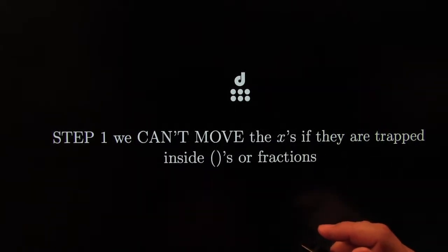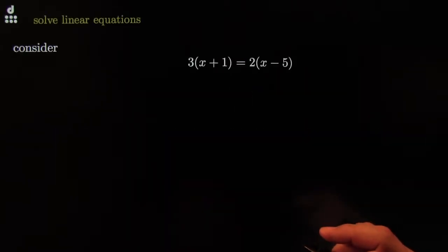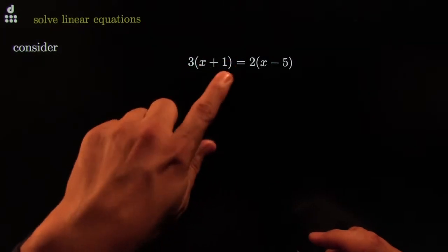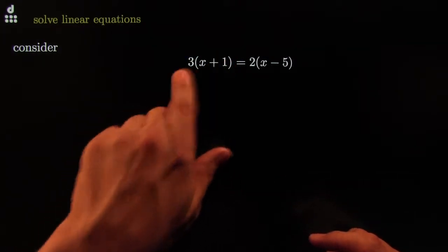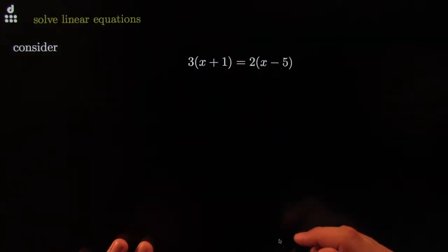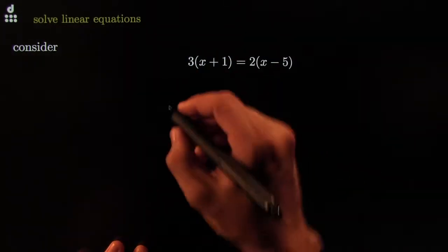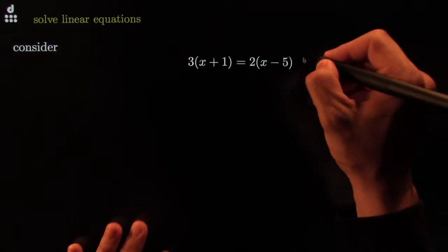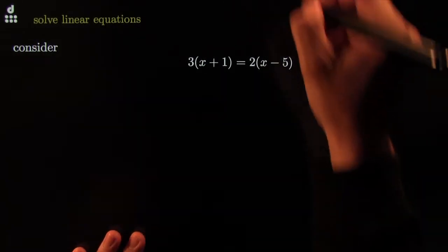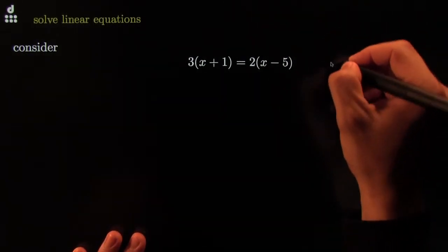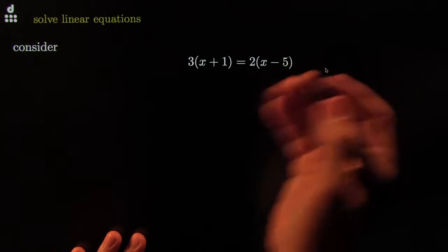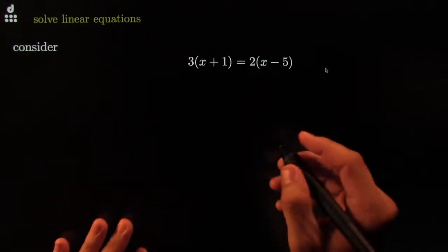Let me give you the most benign example of that. See the X's? I can't just start moving them — they're trapped inside a term that has parentheses. So this takes us to step number one. Step number one says you should free the X's so that you can move them around.